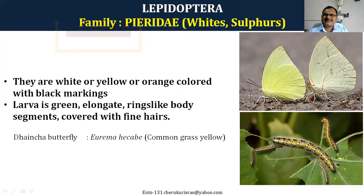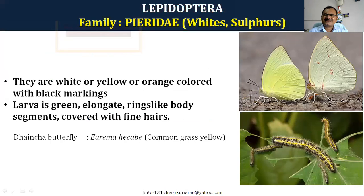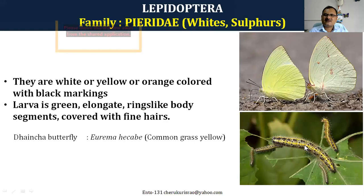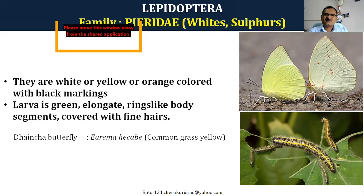Moving on to Pieridae. Pieridae are not very economically important in our case, but we teach about them because they are very commonly seen. During the rainy season you will see these butterflies here and there — especially they gather on the road wherever there is water. They are white, yellow, or orange colored with black markings and spots. The larvae are green and elongate, with a body like rings attached to each other, covered with fine hairs. These Pierids — whites and sulfurs — are commonly seen in the grasses; that's why we call them the common grassella.